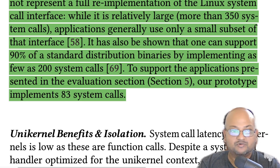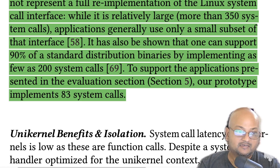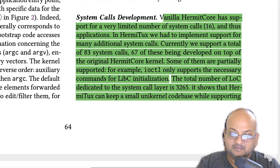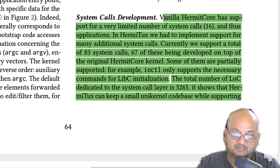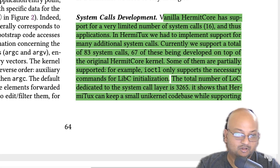So yes, if you need support for every esoteric system call, that's going to be untenable. But if you look at most mainstream popular applications — databases, language runtimes, and so on — you can support those with a small subset of the full 400 system calls that Linux has. The authors were able to do this with a relatively modest engineering effort; the total lines of code dedicated to the system call layer in Hermitux is only about 3000. So in practice you can still support many real world applications while retaining the advantages of having a small unikernel size.